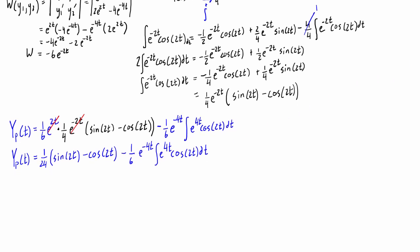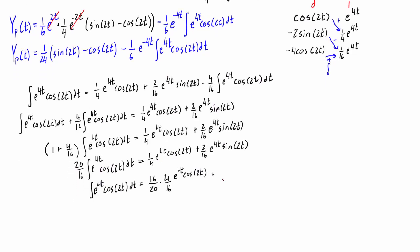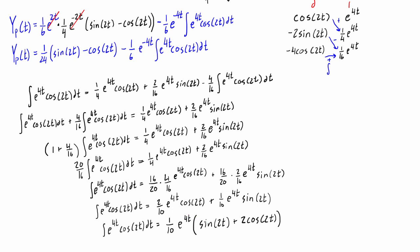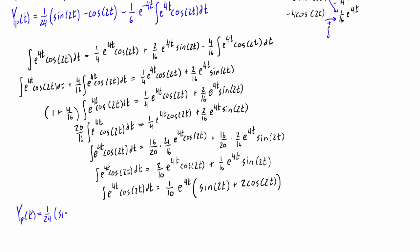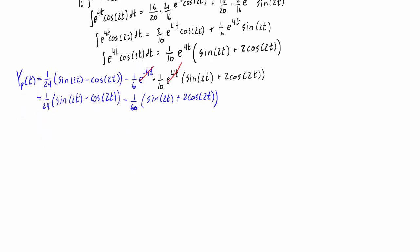Now we just have to solve the second integral, and we do it in the exact same way using integration by parts. Rather than walking through all of that again, the result is (1/10)e^(4t) times (sin(2t) + 2cos(2t)). We substitute that back into the blue equation where we have ∫e^(4t)cos(2t) dt. The e^(−4t) cancels with e^(4t), and then we simplify the last bit.